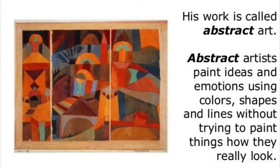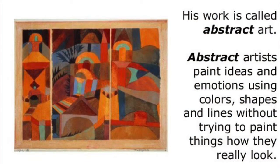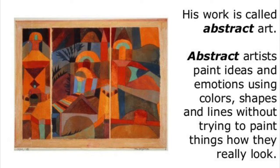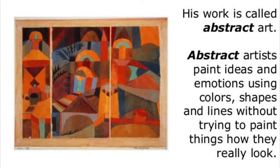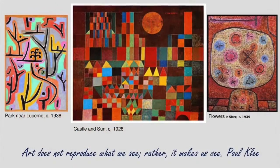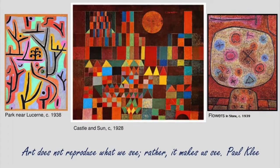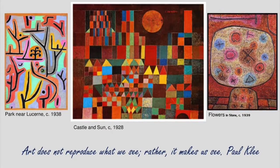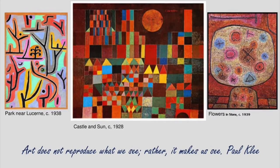Abstract art uses ideas, emotions, colors, shapes, and lines without trying to paint things how they really look. Paul Klee said that art does not reproduce what we see in real life — rather, it helps us to see.